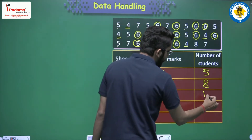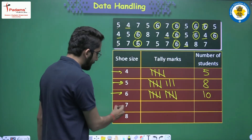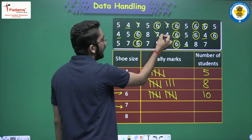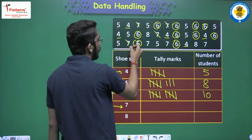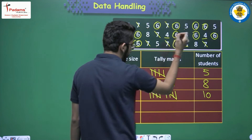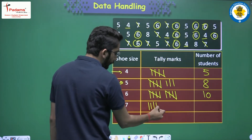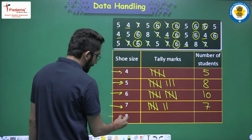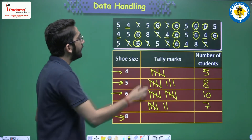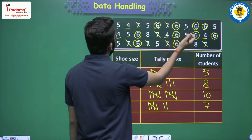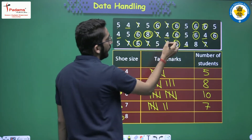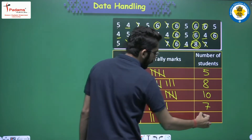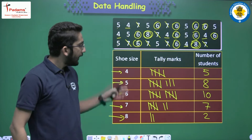For shoe size 7, there are 7 students — one tally group of 5 and 2 extra marks. For shoe size 8, there are only 2 students — just 2 marks. So we have now filled the complete tally table.